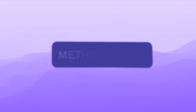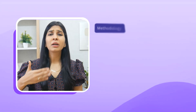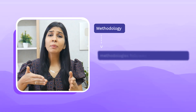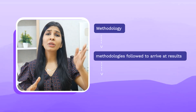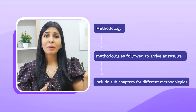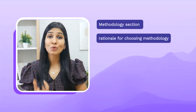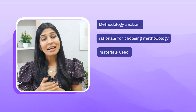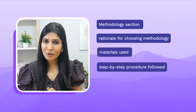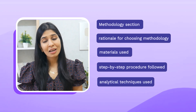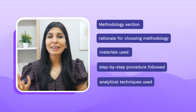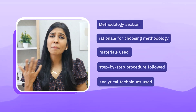After the literature review comes the methodology section, where you explain all the methodologies you followed to arrive at your results. If you had multiple subtopics with multiple methodologies, put them under separate sub-chapters. For every methodology, give the rationale for why you chose it, what materials you used, the step-by-step process followed, and all the analytical techniques used. You can also go into detail explaining these analytical techniques and how they are carried out, along with sample preparation.